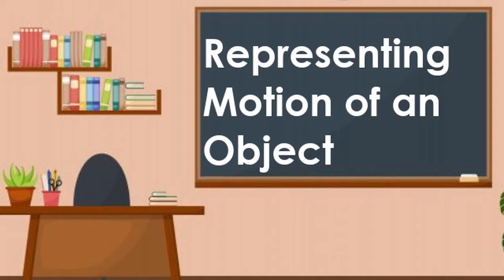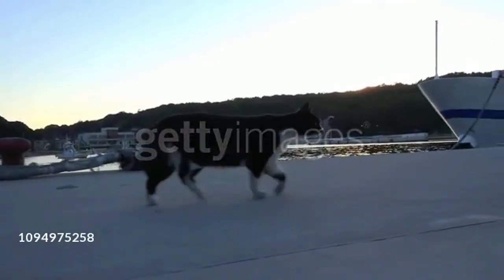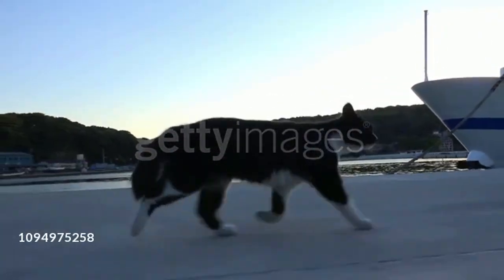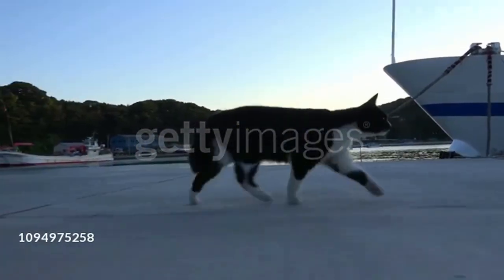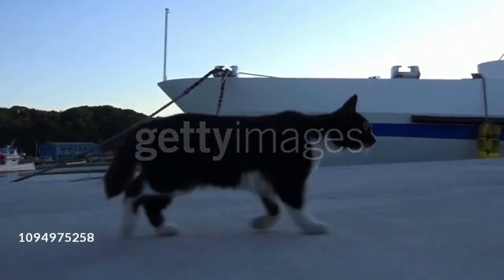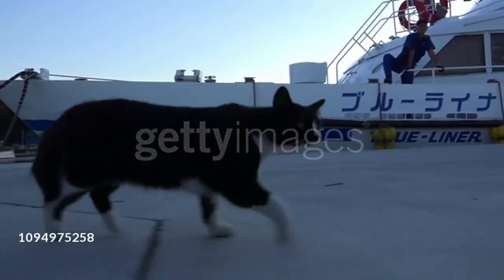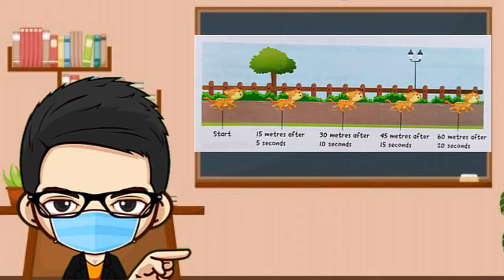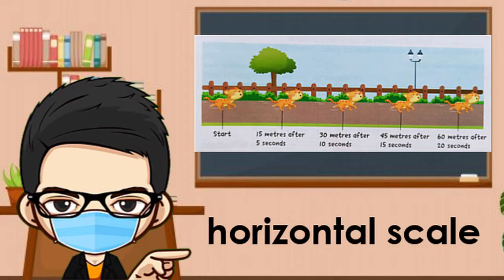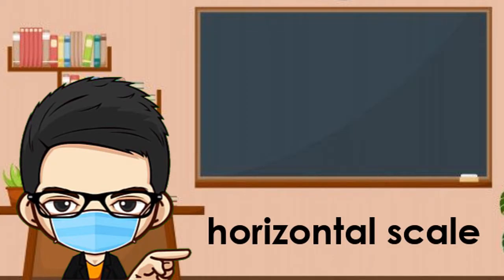Representing motion of an object. Kitty went for a run in the sidewalk. She ran a distance of 5 meters every 5 seconds. We can represent Kitty's motion using a horizontal scale like this.